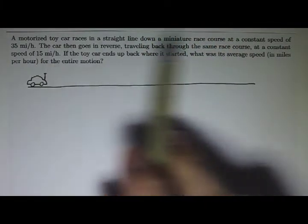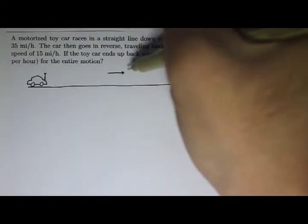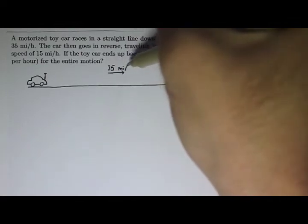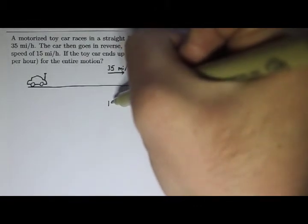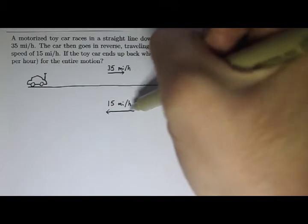And he goes at a constant speed of 35 miles per hour on the way down the course. But then he goes in reverse. And he goes back the other way and he goes 15 miles per hour back the other direction.